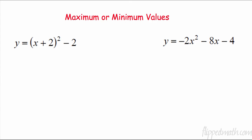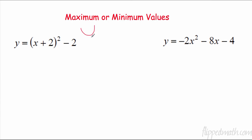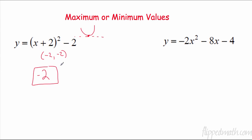Now for minimum and maximum values — this is a positive, so this parabola opens up. That means we're going to have a minimum value, and the minimum value occurs at the vertex. The vertex is at (-2, -2), so the minimum value — the lowest possible y — is negative 2. In vertex form, it's really nice.